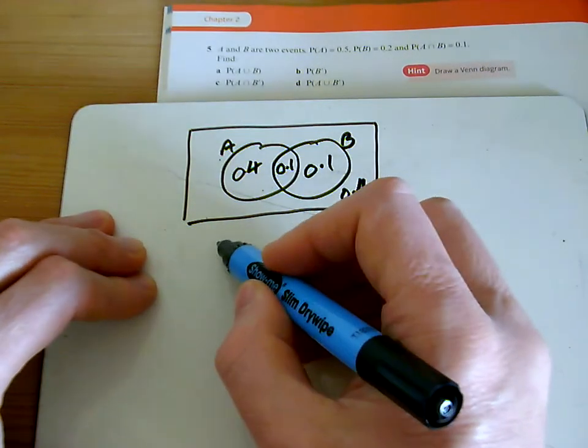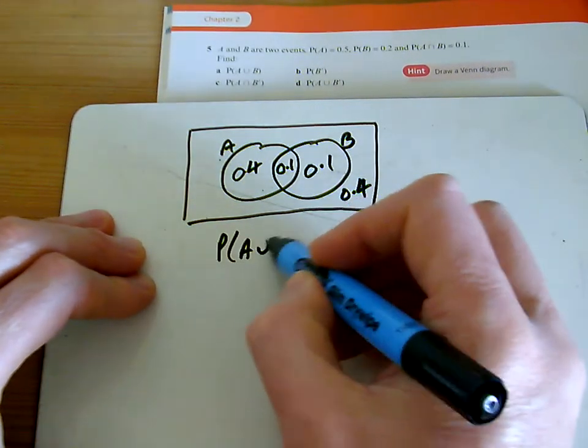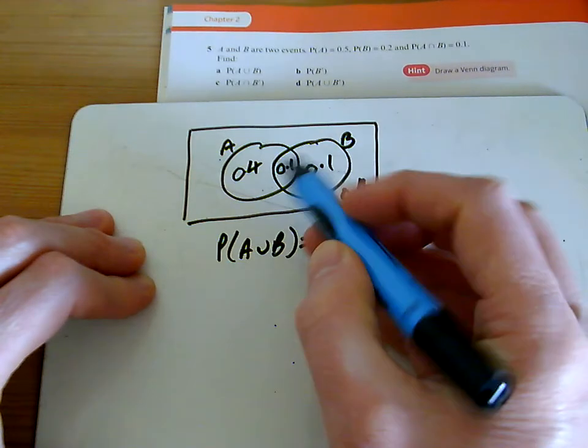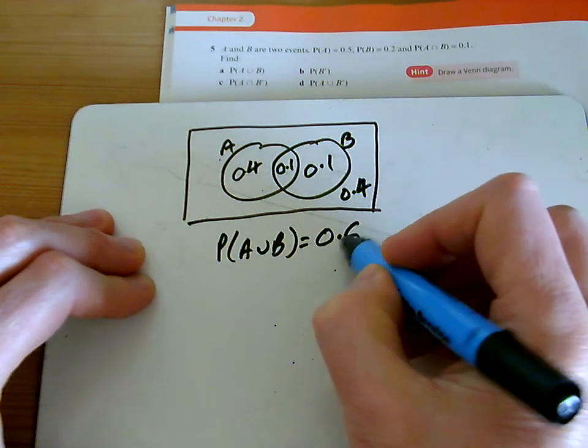And so now we can answer the questions. So A union B is all of these ones added up, the 0.6 I just mentioned.